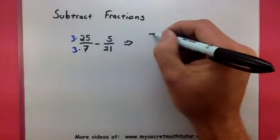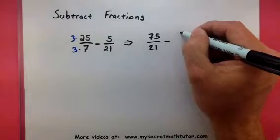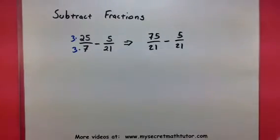This will change my fractions and give me 75 over 21 minus 5 over 21. Now my denominators are exactly the same.